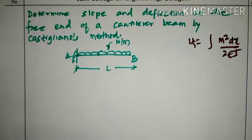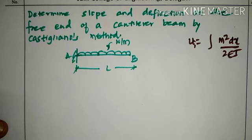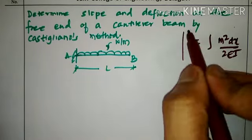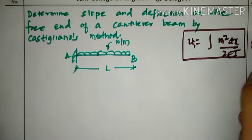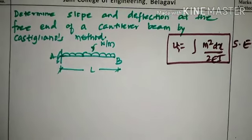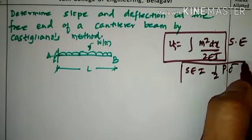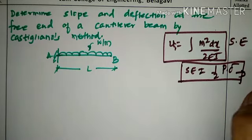There were two derivations covered in the previous session. The first was for a component subjected to a purely axial load, and the second was for a component subjected to bending — that is, flexure. For bending, we used the theory of simple bending: M/I = F/Y = E/R. The resulting strain energy expression stored in a member was equated to the external work done, that is, half P into delta — this is the strain energy method.